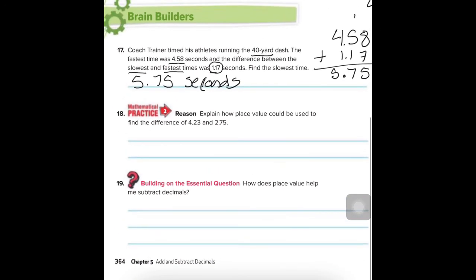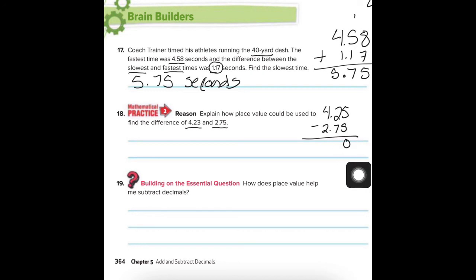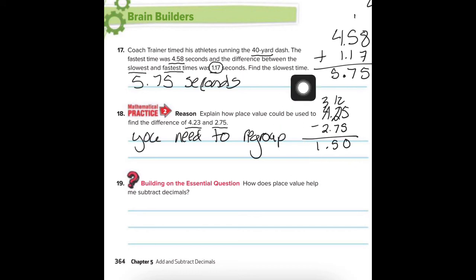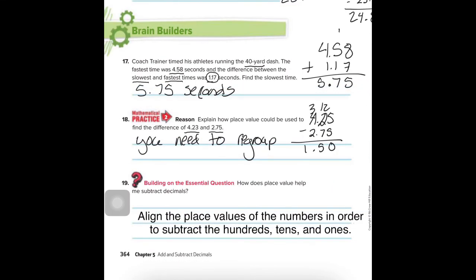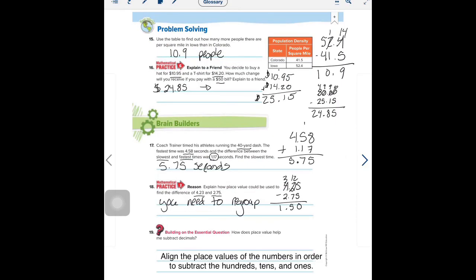Number 18: Explain how place value can be used to find the difference of 4.23 and 2.75. You have to regroup. When you subtract, you can take 5 from 5 just fine, but you have the problem when trying to take 7 from 2 — you need to regroup. Turn that into a 3 and that into a 12. Your answer is 1.48. You need to explain that you need to regroup. Make sure you have this equation. Check your work and join me on the next page.